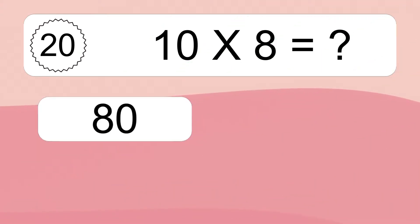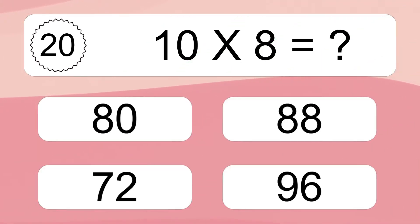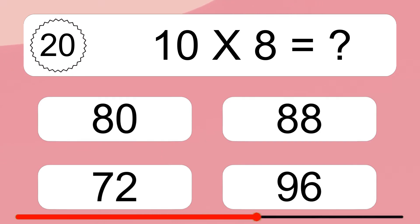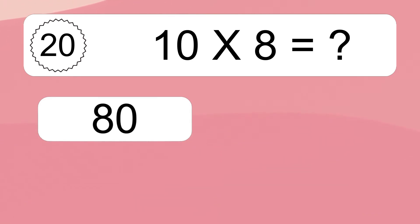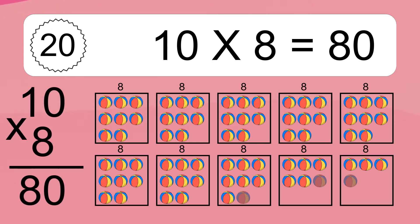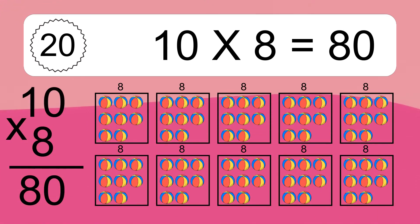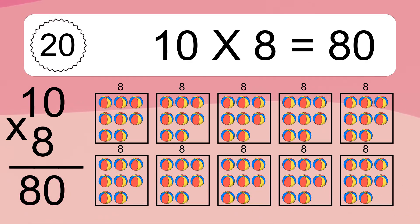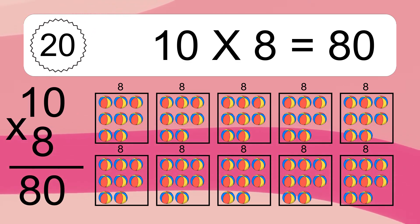10 times 8 equals what? 10 times 8 equals 80. We have 10 boxes and each box has 8 colorful balls inside. If you count all the balls in all the boxes together, you will have 10 times 8 balls. This equals 80 balls.